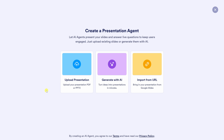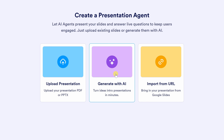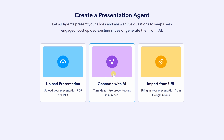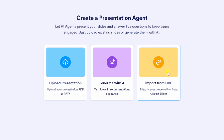On this page, you'll see three different ways to create a presentation agent. First up, you can upload a presentation — this is if you already have a PDF or PowerPoint file. In the center, you can also generate with AI if you want to start from a text prompt and don't have any existing slides. Over on the right-hand side, you can also import from a URL, which is great for Google Slides.